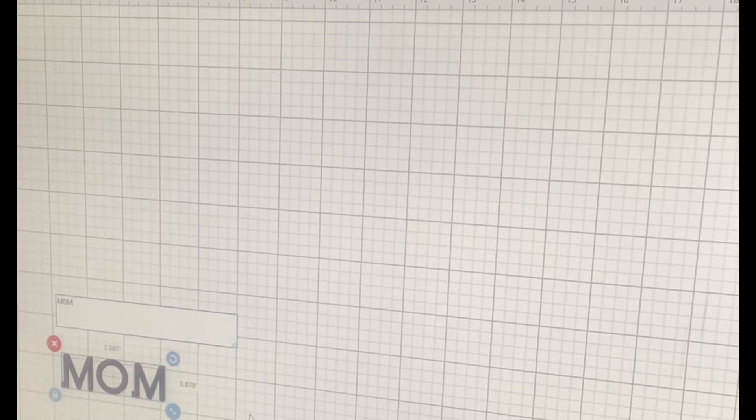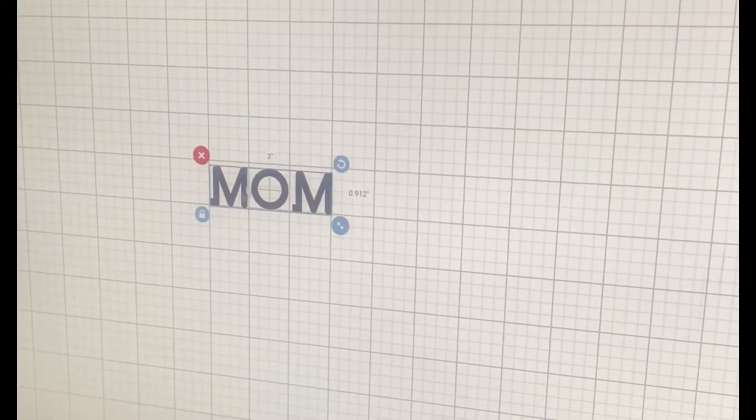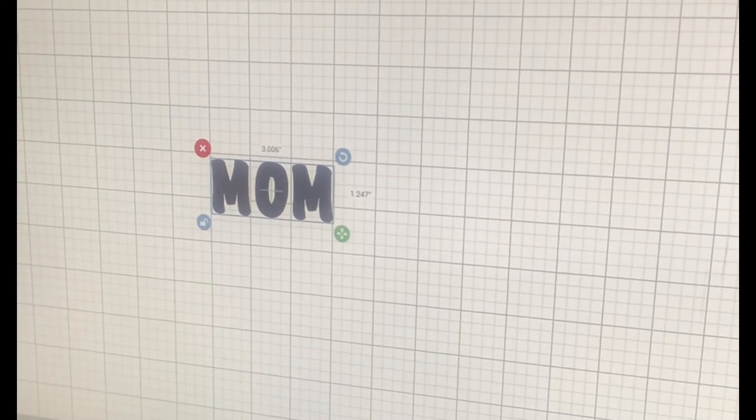Once you open up Design Space, you are going to choose your font and your text. So we're gonna do 'mom' and we're gonna put it at three inches. You want to find a really thick font. I like this one because it's round and fat.